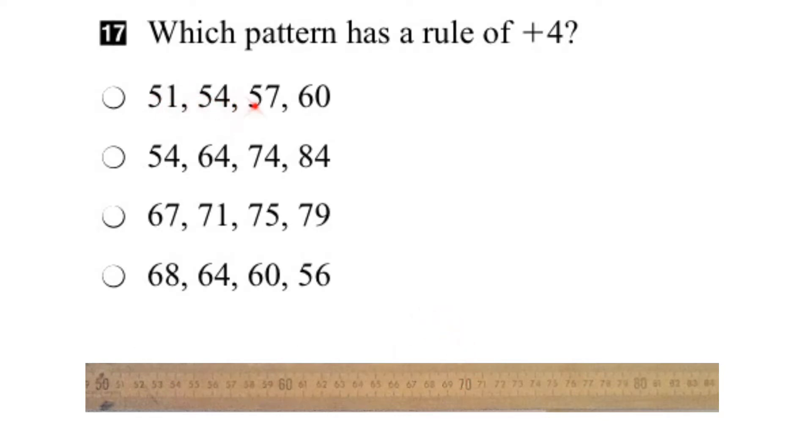Let's look at the first pattern here. We start at 51, and the next number is 54. So let's locate 51 on the ruler, right there, and then we have to get to the next number, 54, which is there. So how many steps did it take us?